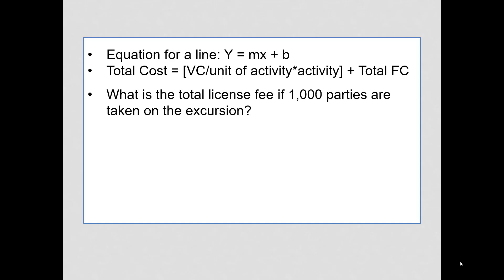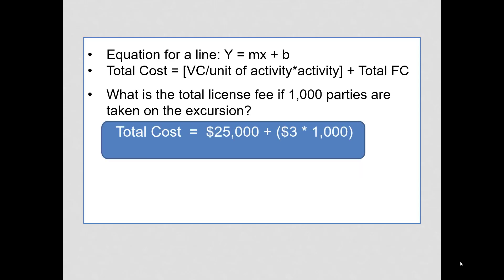What is the total license fee if 1,000 parties are taken on the excursion? And of course, that would be the fixed cost of $25,000 plus the variable cost of $3 per excursion times 1,000 excursions or $28,000.